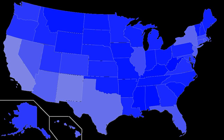While written American English is largely standardized across the country, there are several recognizable variations in the spoken language, both in pronunciation and in vernacular vocabulary. The regional sounds of present-day American English are reportedly engaged in a complex phenomenon of both convergence and divergence. Some accents are homogenizing and leveling, while others are diversifying and deviating further away from one another.